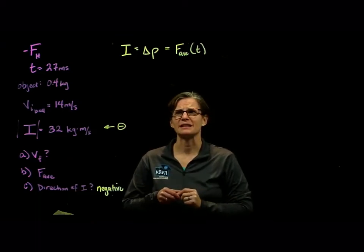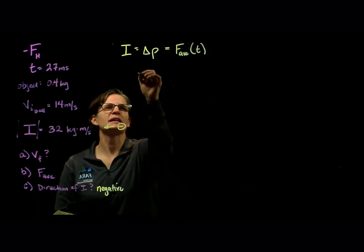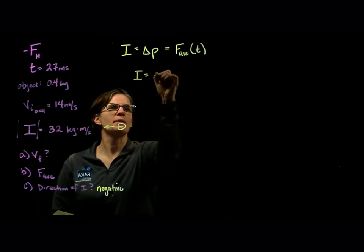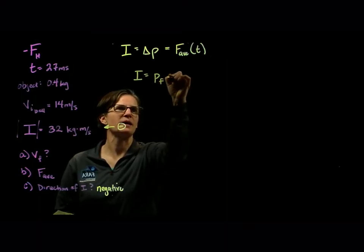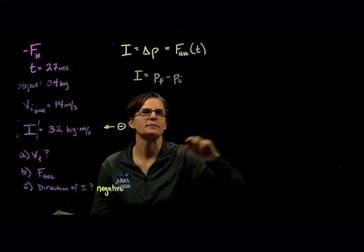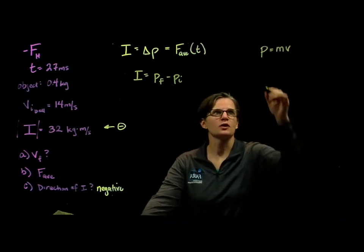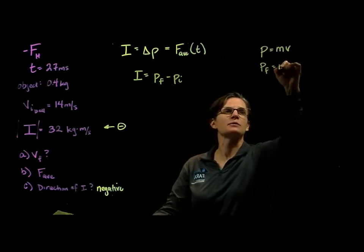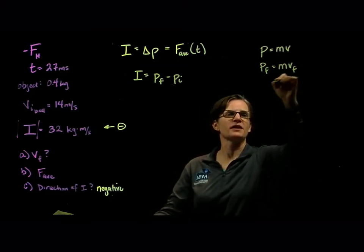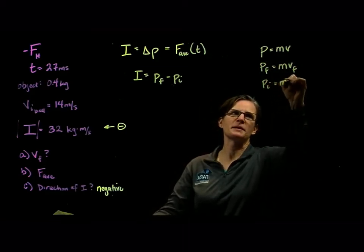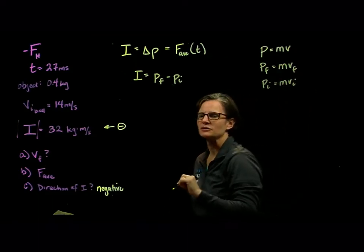All right, well that's question number three out of the way. What about the final velocity? Well we want to keep in mind that impulse is our change in momentum, our final momentum minus our initial momentum. And our momentum, remember, is equal to the mass times the velocity. So our final momentum is going to equal our mass times our final velocity, and our initial momentum will be the mass times the initial velocity.